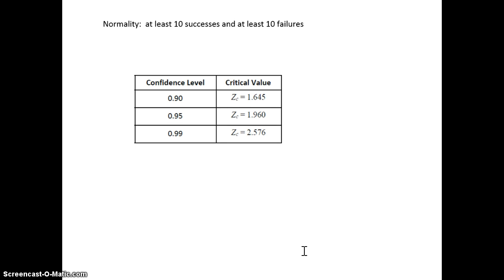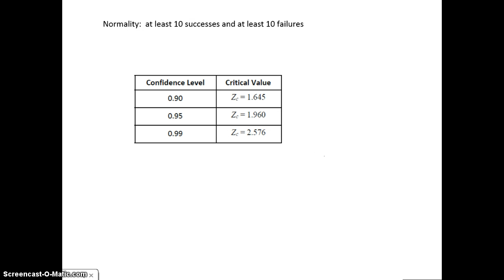For a confidence interval, we need a z-critical value. For a 90% confidence interval, the z-critical value is 1.645 — that's the z-value where 90% of the data falls between negative 1.645 and positive 1.645. For a 95% confidence interval, the true z-critical value is 1.96, not 2 (which was just the empirical rule estimate). For a 99% interval, the z-critical value is 2.576.